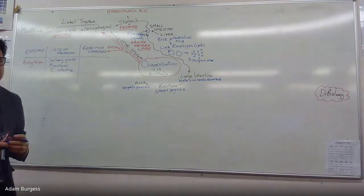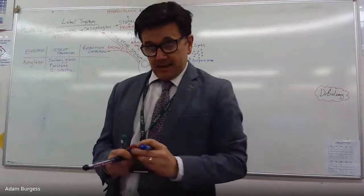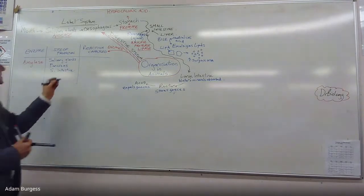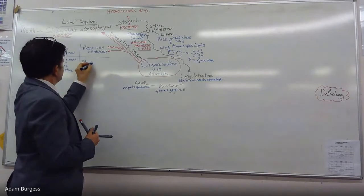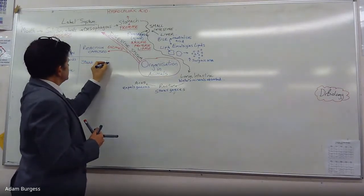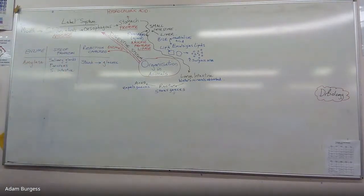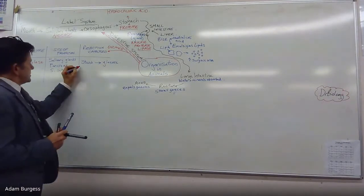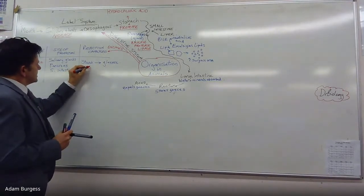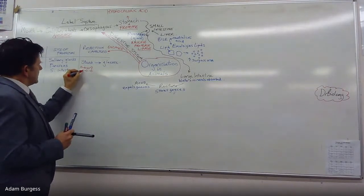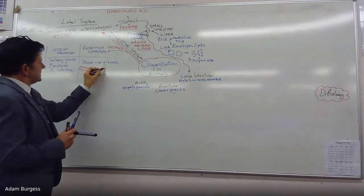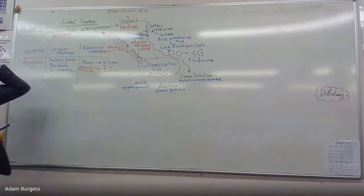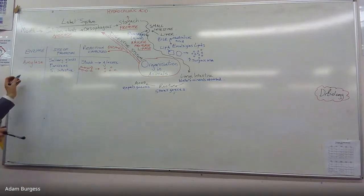Amylase is made in the salivary glands. It's also released from the pancreas and from the small intestine as well. Three places. What's it breaking down? Starch. It breaks down starch, which is a large insoluble molecule, into glucose. Starch is a whopping great big molecule made of lots and lots of glucose molecules.